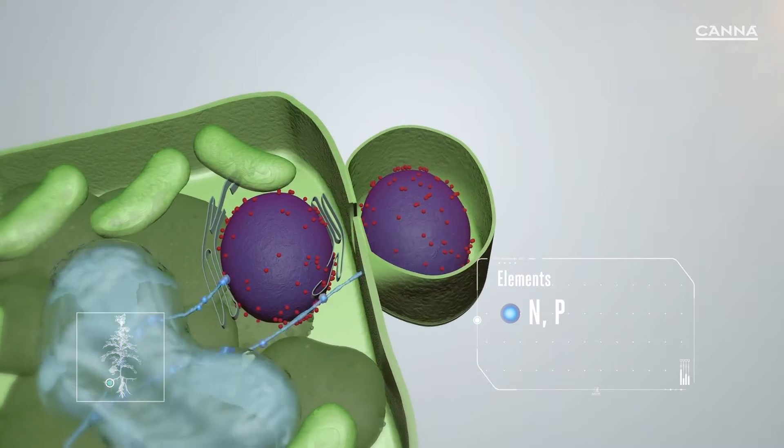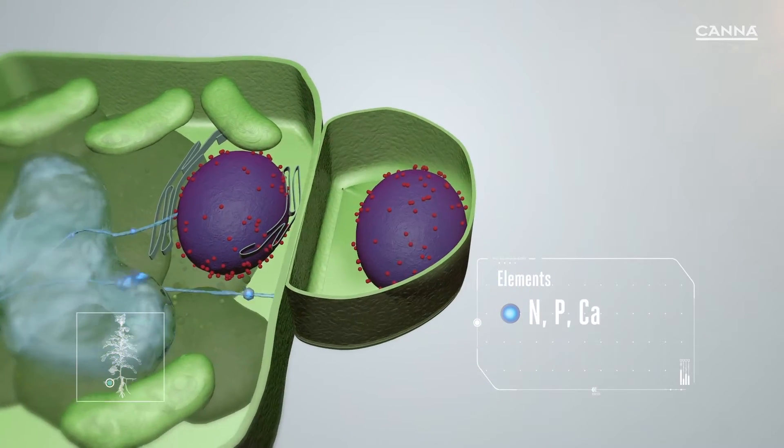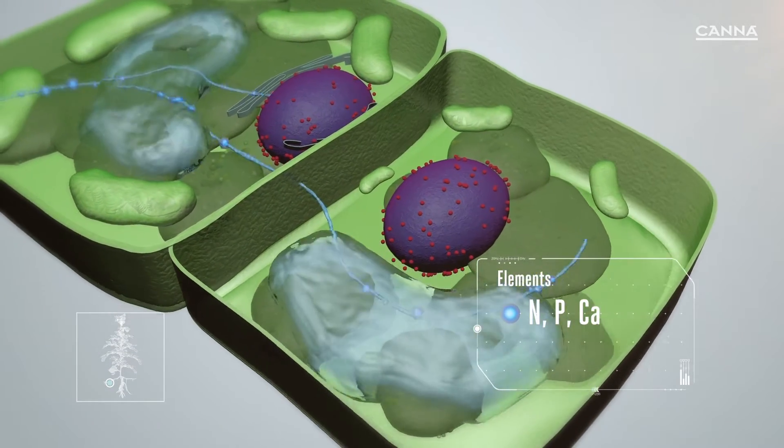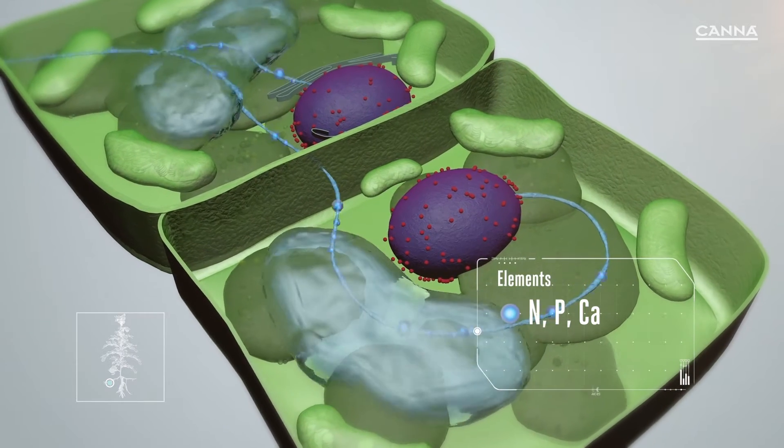Nitrogen, phosphorus and calcium enter the cell, making it grow. The nitrogen acts as building blocks, while the phosphorus and calcium make up the cement that binds these blocks together.